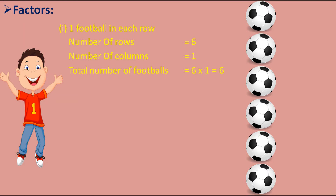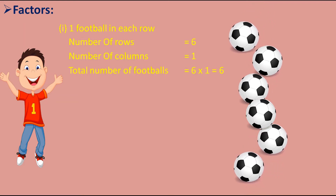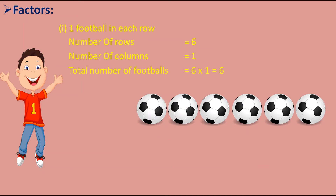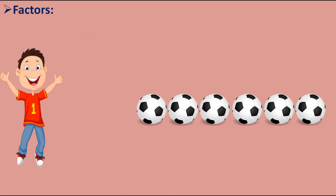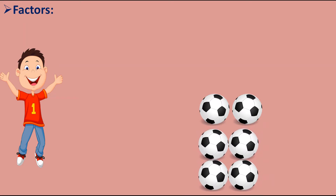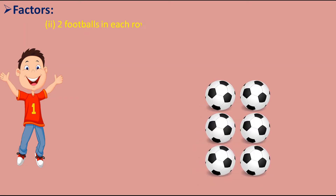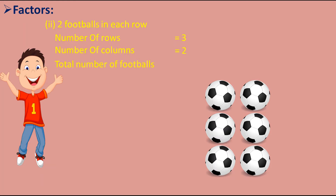Now he tried to put one football in each column. So one football is there in each column, the number of rows is only one and the number of columns are six. So the total number of footballs can be written as 1 × 6 = 6. Now he tried to put two footballs in each row. So there are two footballs in each row, meaning the number of rows are three and the number of columns are two.